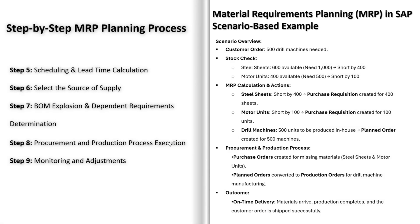Next, SAP calculates lead times and basic dates for the procurement or production process to ensure materials are available on time. Lead time calculation refers to the time it takes to procure or produce materials — lead time for external procurement considers supplier delivery times, while lead time for internal production considers production and setup times. SAP uses these calculated lead times to generate scheduled dates for when materials should be ordered or produced, ensuring materials arrive just in time for production to start.